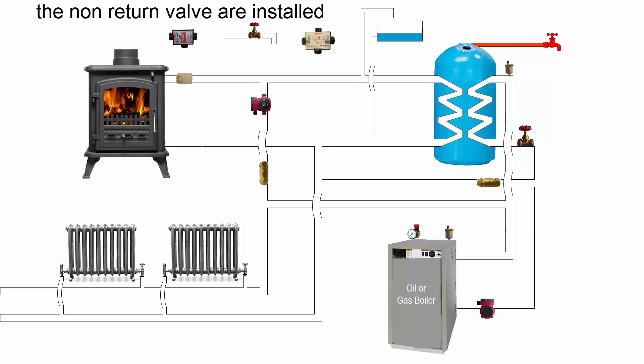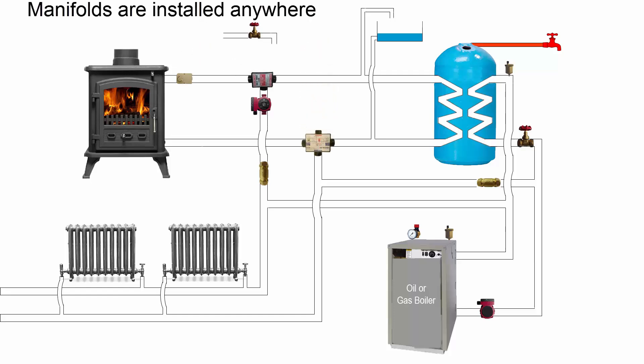How to simply install Heat Hero: The circulation pump and non-return valve are installed on the radiator flow. The Heat Hero flow and return manifolds are installed anywhere on the gravity flow and return.